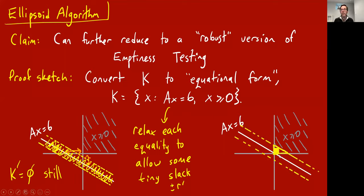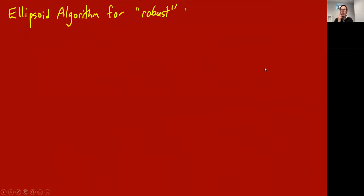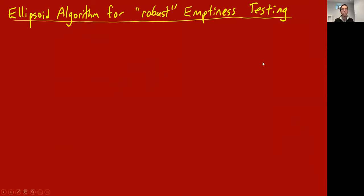This thickening turns the feasible region from just the hyperplane intersected with the non-negative orthant to a very thin slab. If you make r prime small enough, the empty case stays empty — even thickening the hyperplane a little won't hit the non-negative orthant. But in the non-empty case, this thickening will now contain a full-dimensional polytope, including a little cube. So thickening preserves empty versus non-empty but also gives you that the polytope contains at least a tiny full-dimensional cube.